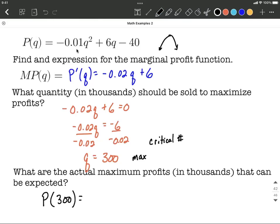P of 300 equals negative 0.01 times 300 raised to the second power plus 6 times 300 minus 40. Probably get the calculator out to help us here. I got it to be $860,000.